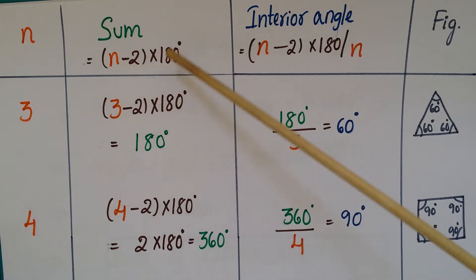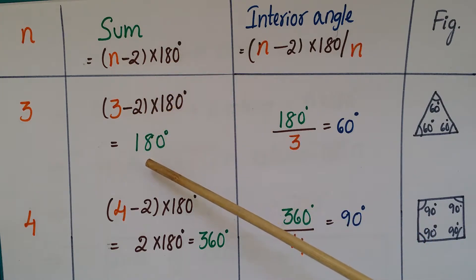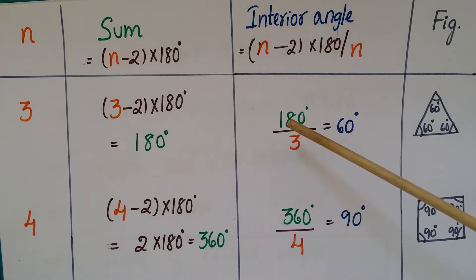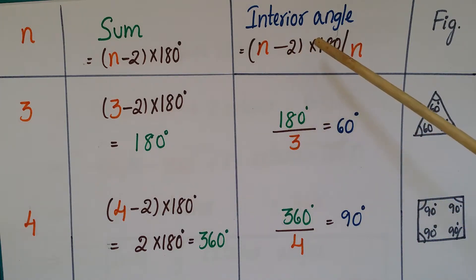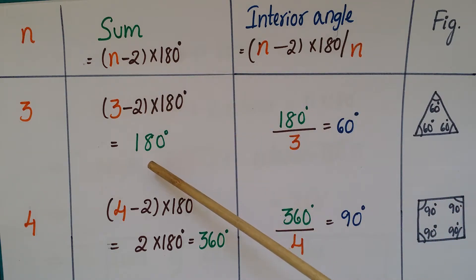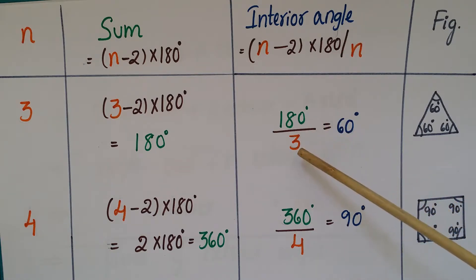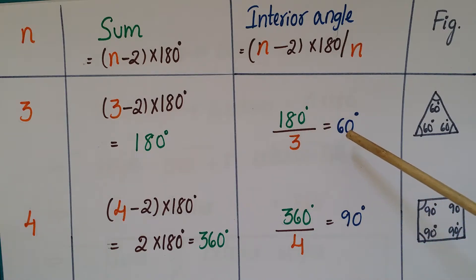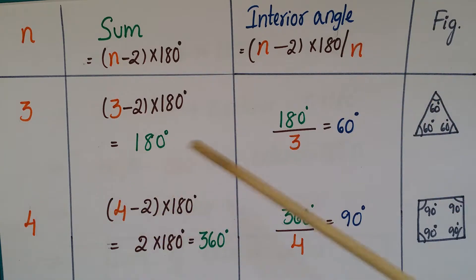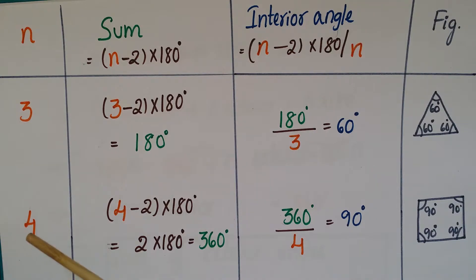First, suppose the number of sides is 3 — that is a triangle. The sum of angles is (3 minus 2) into 180, which equals 180 degrees. The interior angle is 180 divided by 3, which equals 60 degrees. So each interior angle of this triangle is 60 degrees. This is the equilateral triangle.